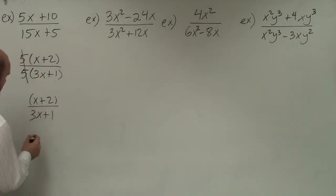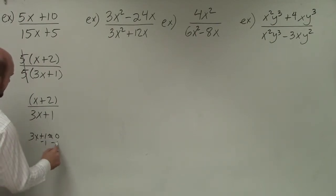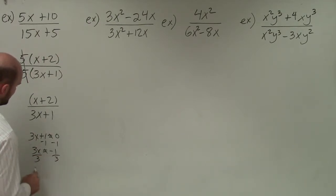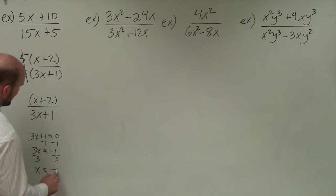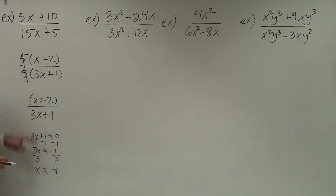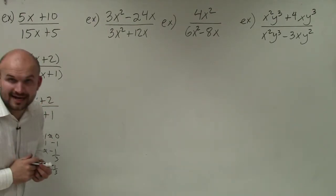Remember, in our denominator, we also want to make sure what our denominator cannot equal. So we say 3x plus 1 cannot equal 0, and we solve. Therefore, x cannot equal negative 1 third, because our denominator cannot equal 0. We go ahead and solve and put that as a constraint: x cannot equal negative 1 third.